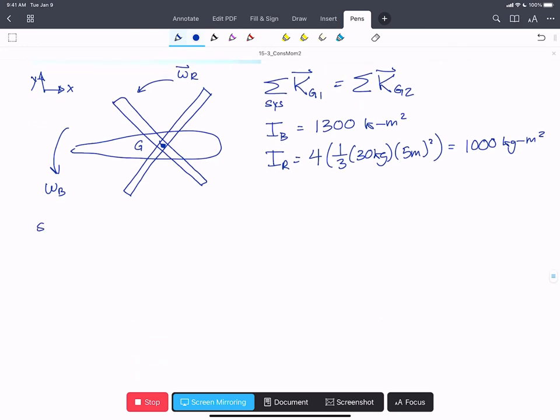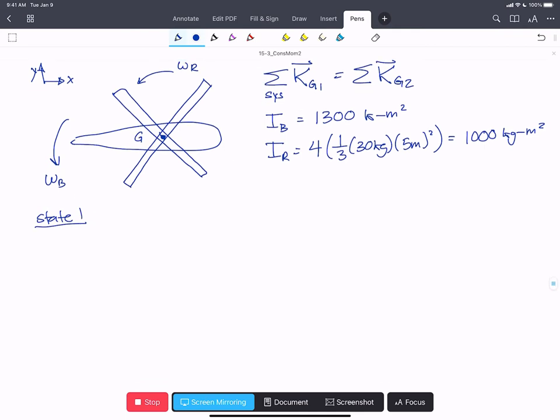So let's talk about state one. At state one, this is before the rotor shifts speed. We have an omega of the rotor at state one. We're given 200 revolutions per minute. We can convert that to rads per second. One minute is 60 seconds, and two pi is one revolution. And we end up that this is 20.93 rads per second.